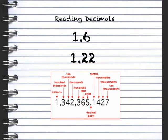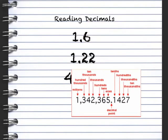To read 1.22 the school way, I see that the last number, the two, is in the hundredths place. So, to read this decimal the right way, I would say 1 and 22 hundredths. Easy peasy.